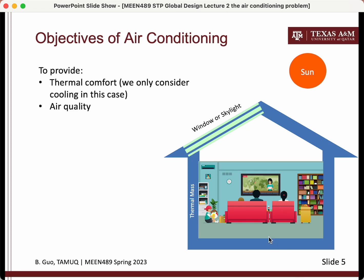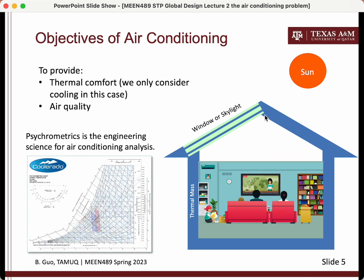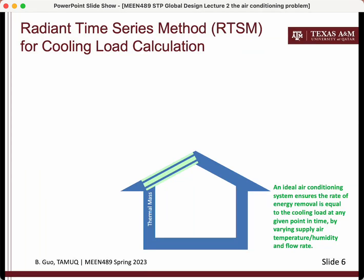The underlying engineering science for air conditioning design and analysis is psychrometrics, which is the study of moist air. We are going to use the radiant time series method for cooling load calculation. In the ideal case, the air conditioning system would remove energy from the conditioned space — the space where air conditioning is provided — at a rate equal to the cooling load.